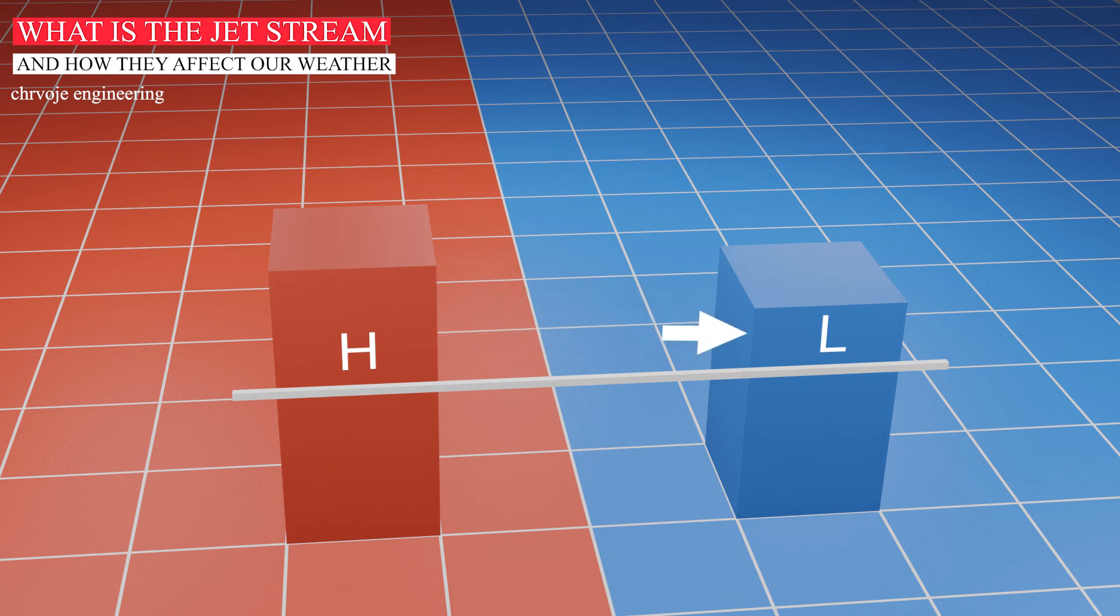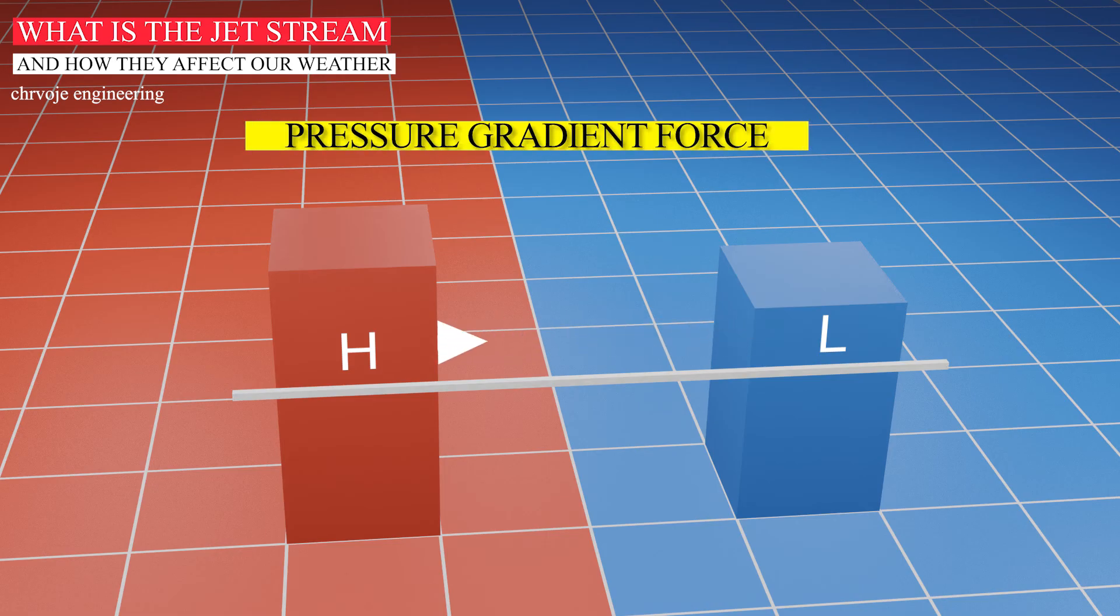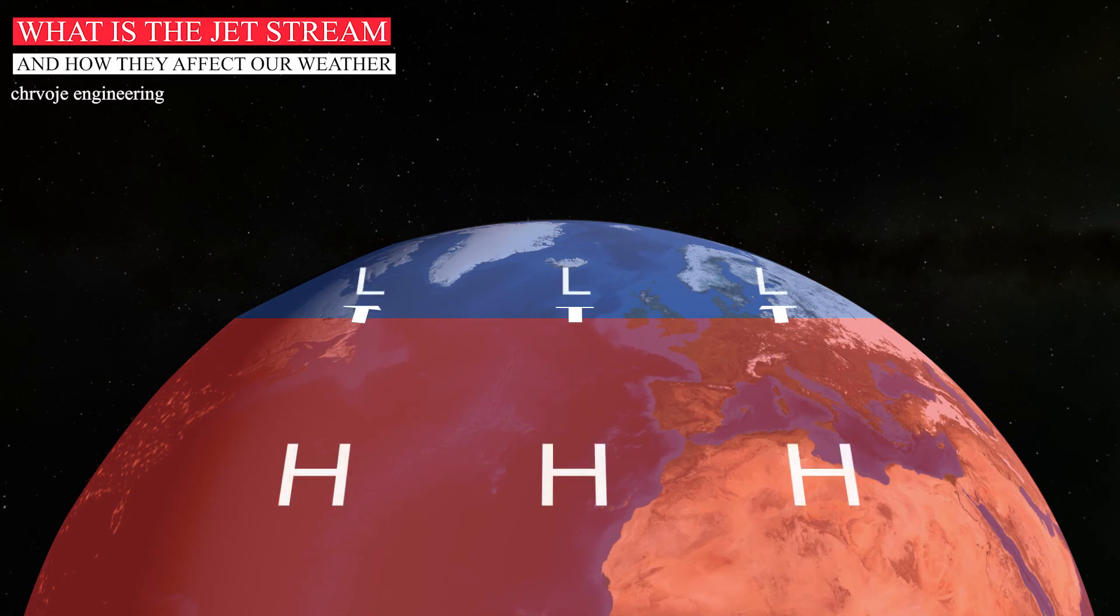The pressure difference caused by this temperature gradient produces a pressure gradient force. The pressure gradient force acts from high to low pressure, so theoretically, in the northern hemisphere, air would flow from south to north.